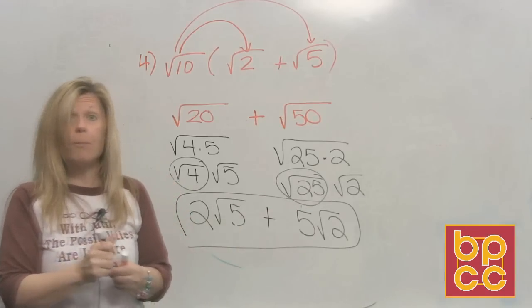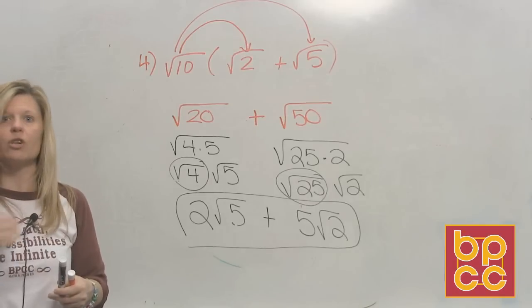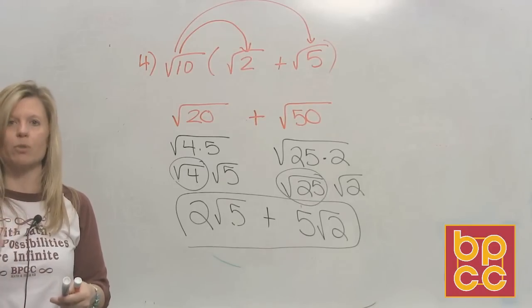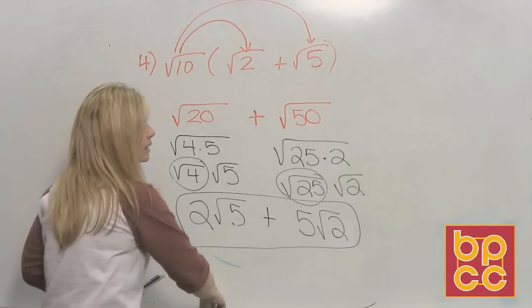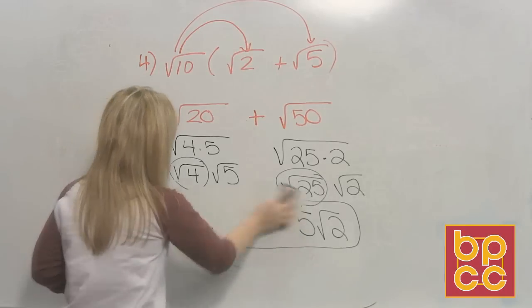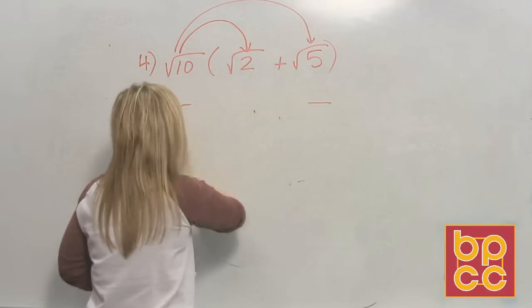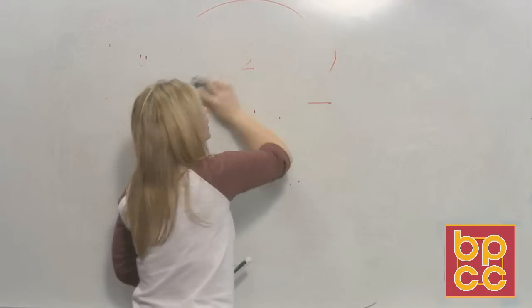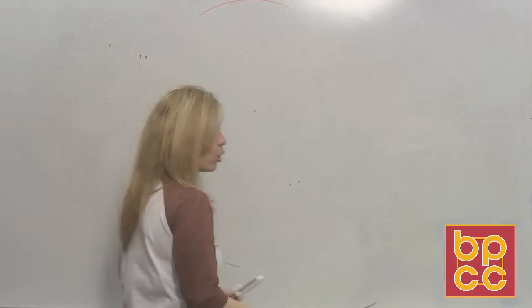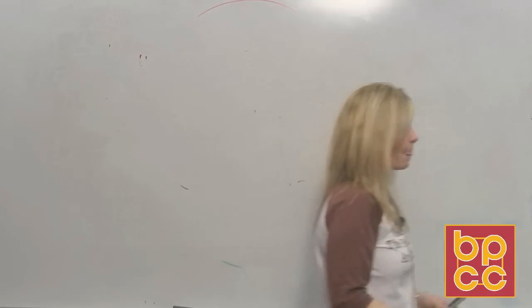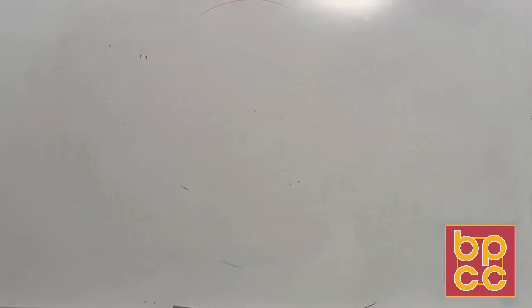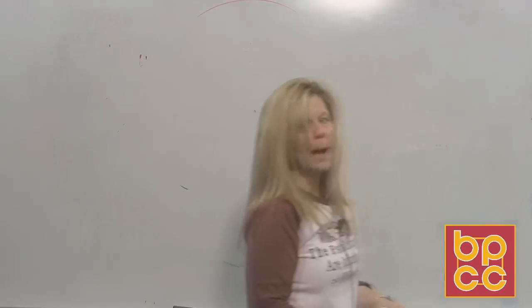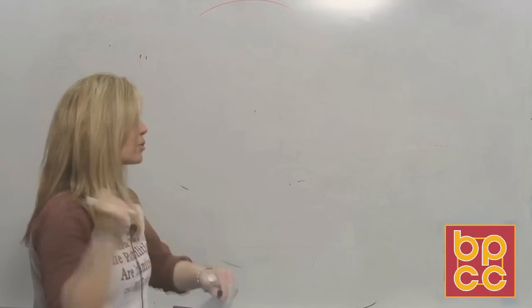It's very important you understand: we're multiplying and still using the same rules. Not only do you multiply monomials and a monomial times a binomial, but you can also multiply binomials times binomials. Look at example six in your notes — this is important, we're going to review something we've already learned.